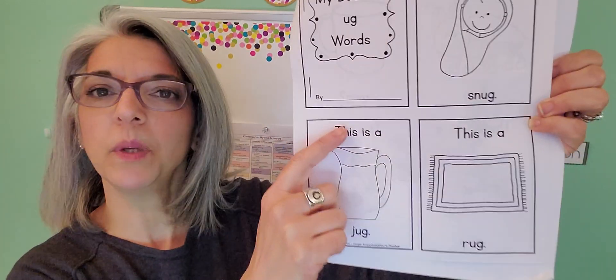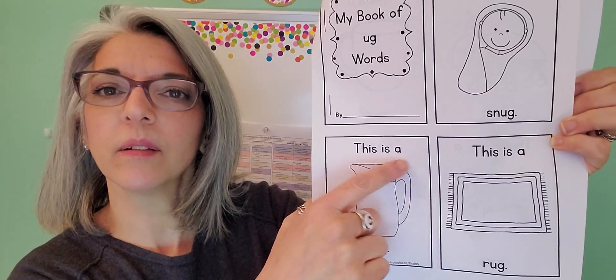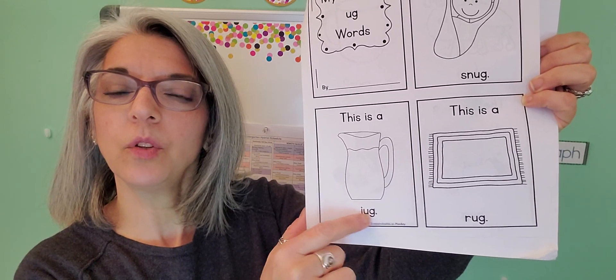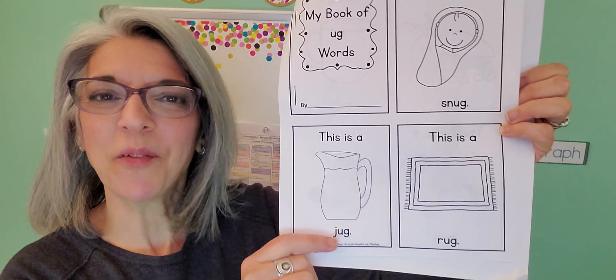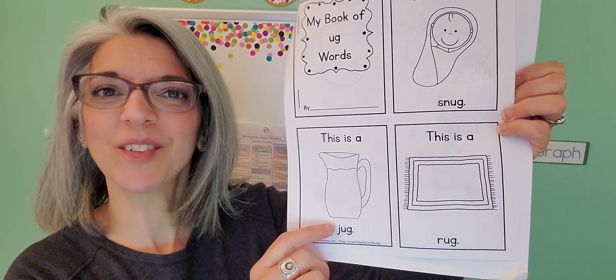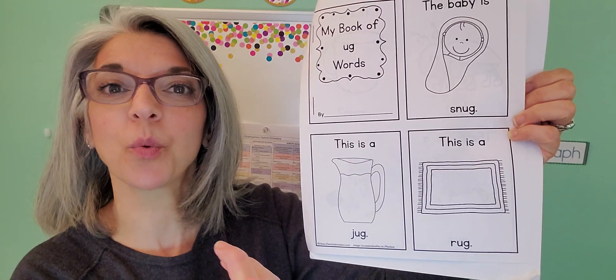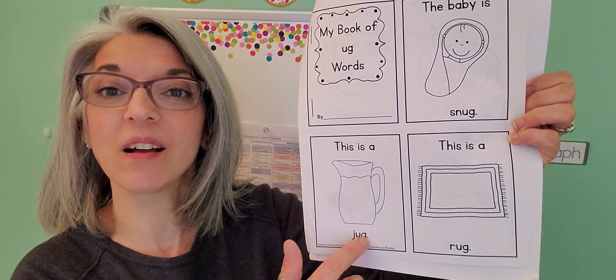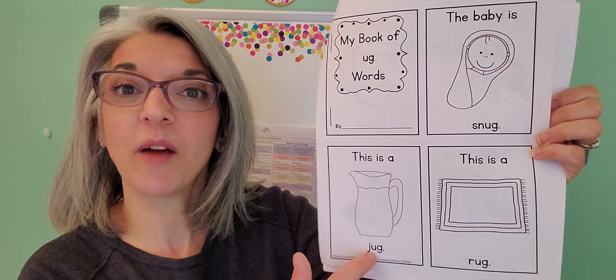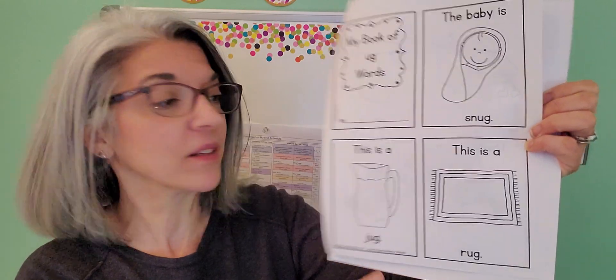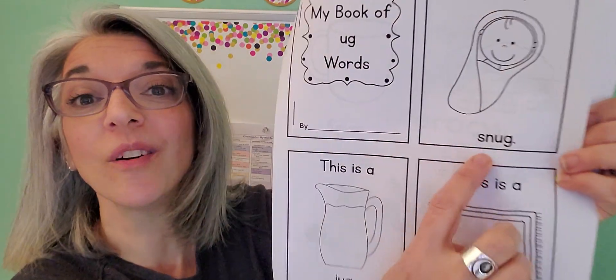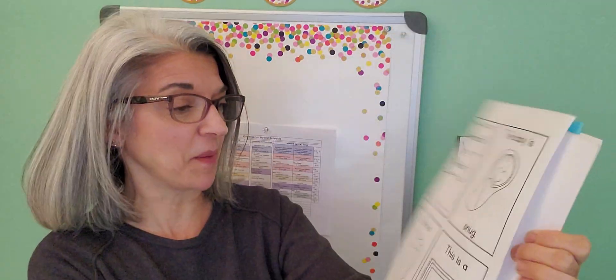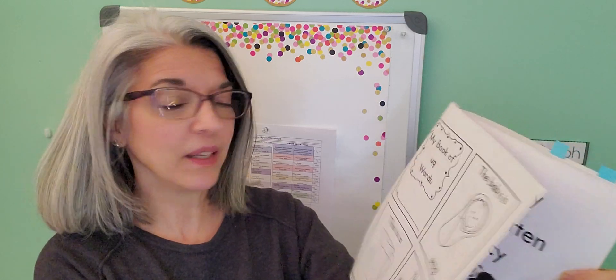It has sight words we know in it — 'this is a' — and then you can use your awesome sounding-out skills to figure out the words. And since it's the Ugg word family, really just focus on that first sound, or first two sounds in some of them. That's your second must-do activity.